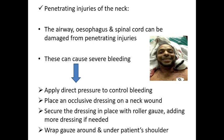Penetrating neck injuries — such as a knife wound — can damage airways, esophagus, spinal cord, and blood vessels, causing profuse bleeding. Apply pressure to control bleeding and place an occlusive dressing around the neck. If the stabbing object is still in the neck, do not try to remove it. Secure the dressing in place and send the patient to hospital.